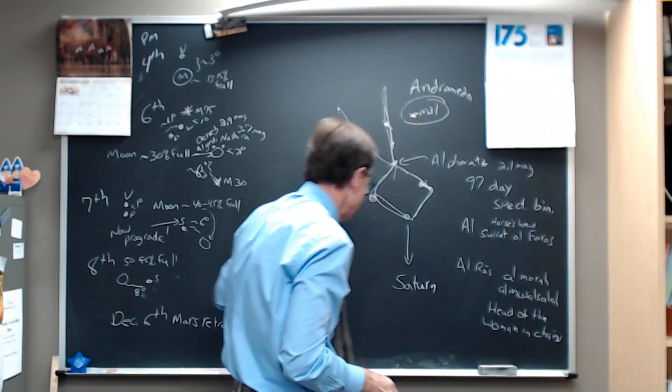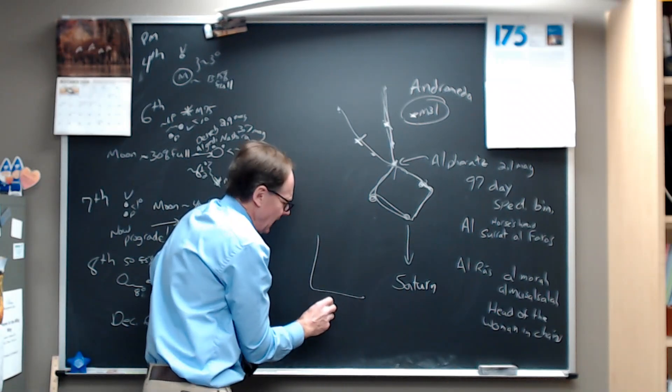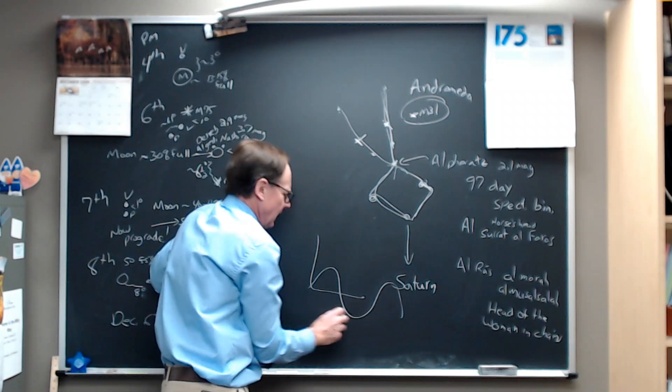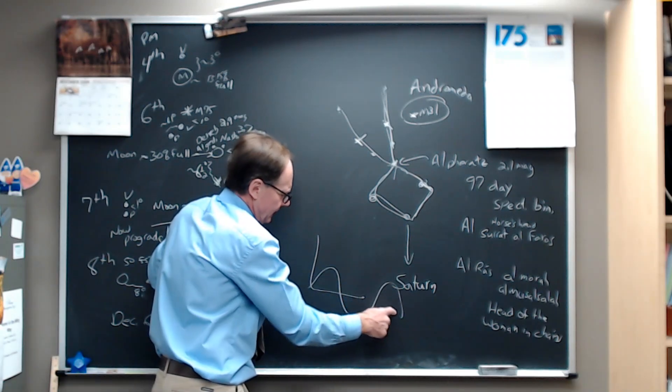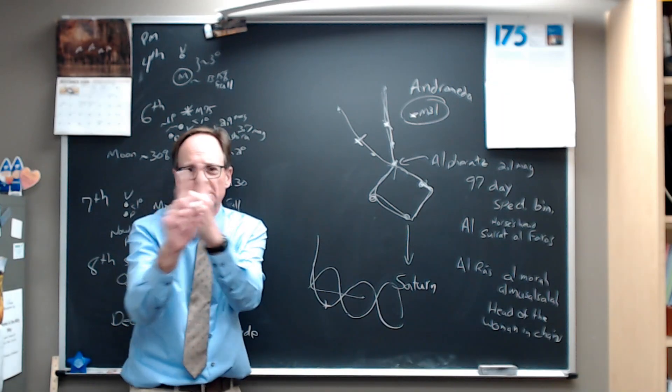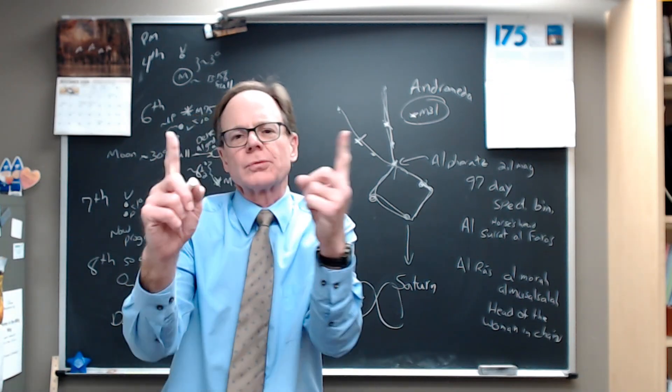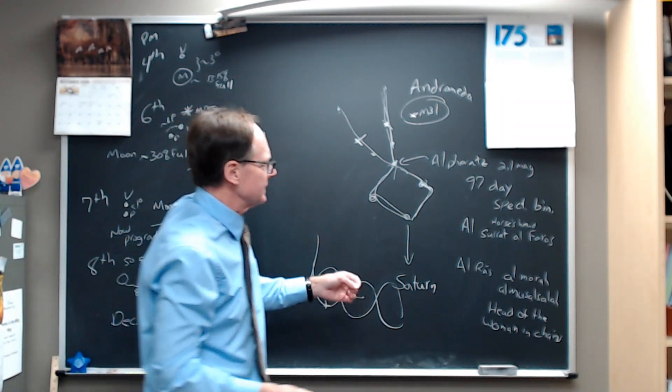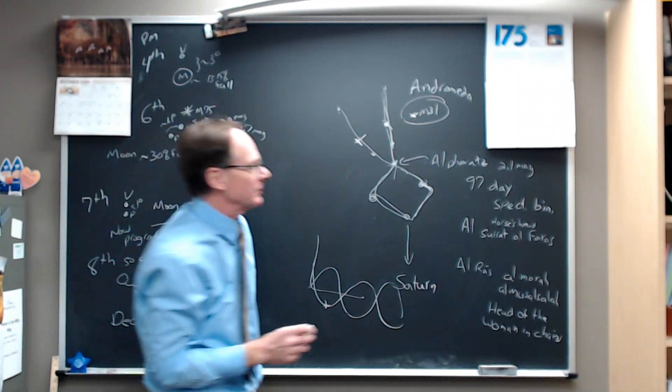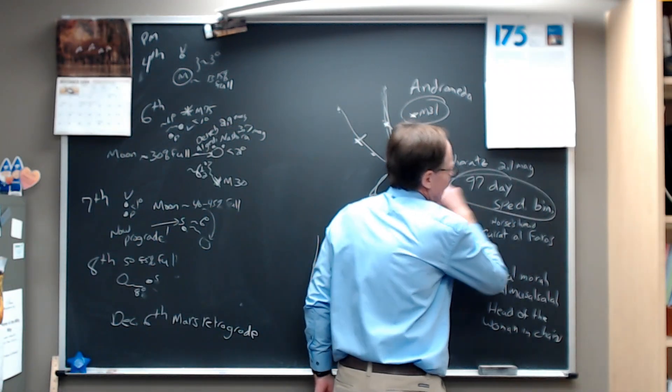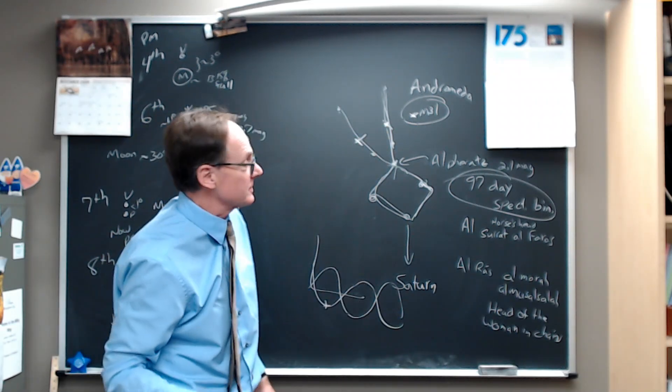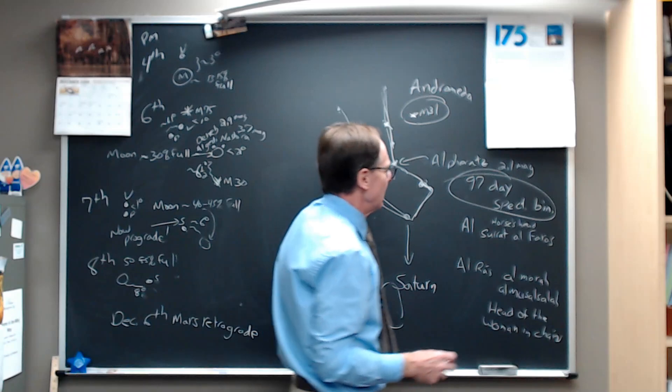And so the spectroscopic binaries, if you made a graph of the wavelength versus time, one would be doing this, bluer, redder, bluer, redder. And the other would be doing exactly the opposite, redder and bluer. So you see these two lines walking back and forth in this rainbow with the dark lines on top of it. That's a spectroscopic binary. Alpheratz is a great example of a spectroscopic binary, 97-day period. You don't see the individual stars. You're just seeing the spectrum of the stars of what's going on there.